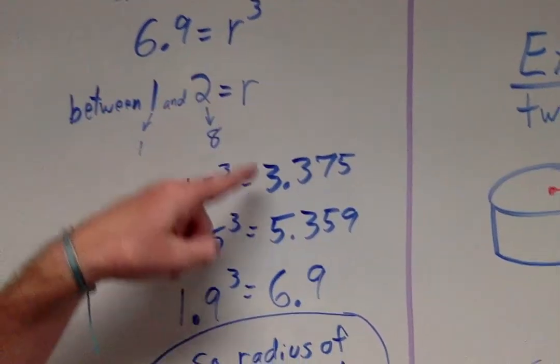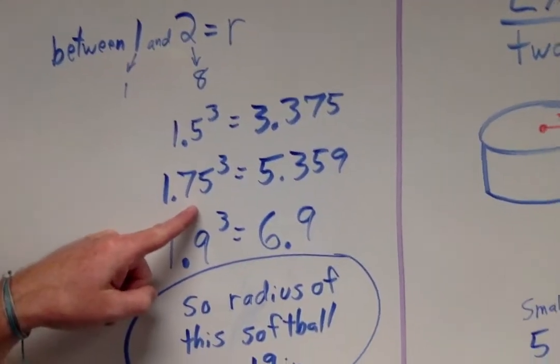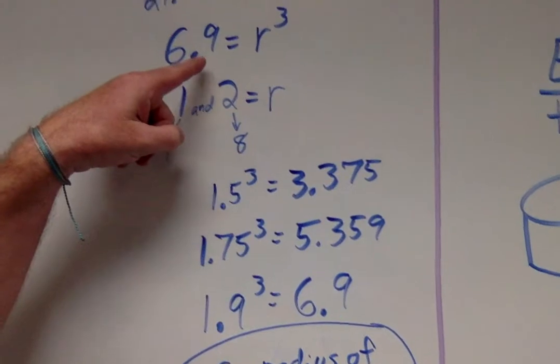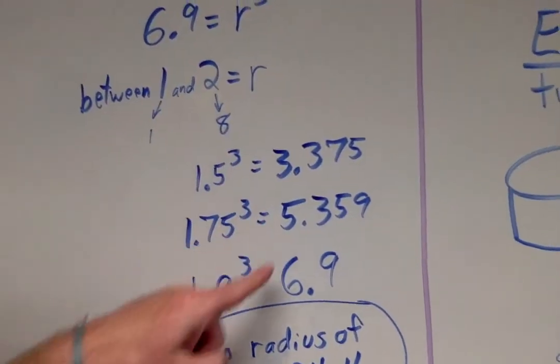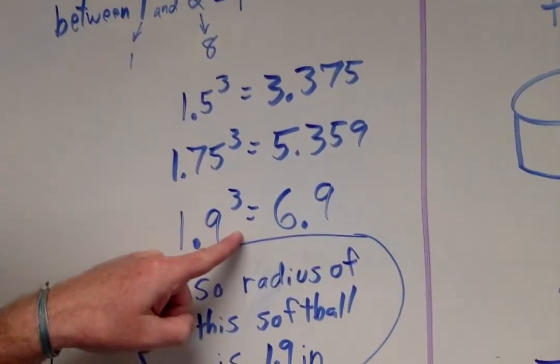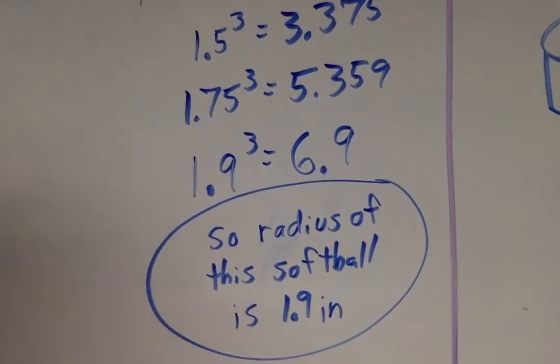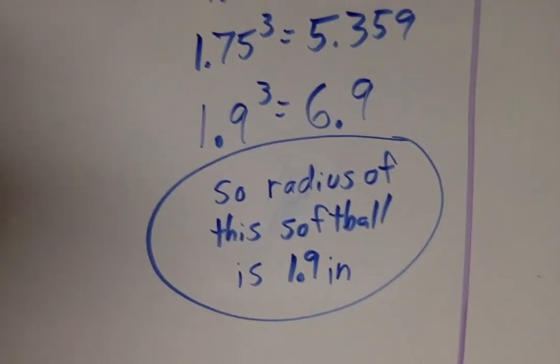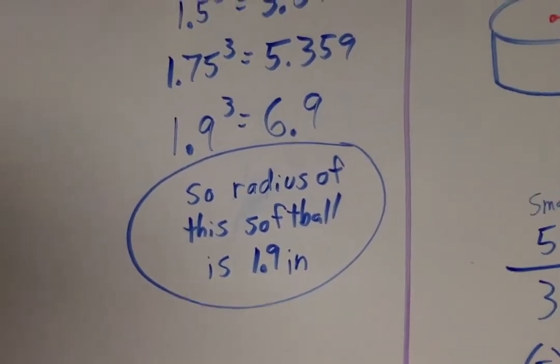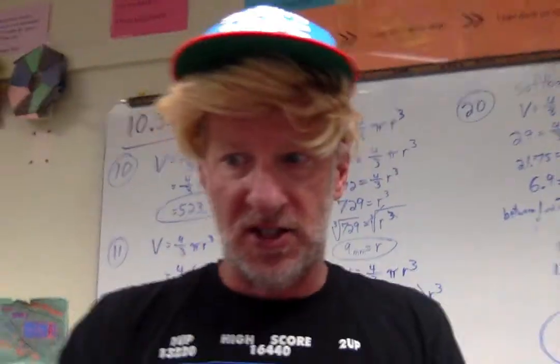Cubed? Not close enough! So, I tried a 1.75! Not close enough to that 6.9! Oh, but when I tried a 1.9, I got super-duper close! So, let's say the radius of this softball, everybody, is about 1.9 inches! Hope that made sense!